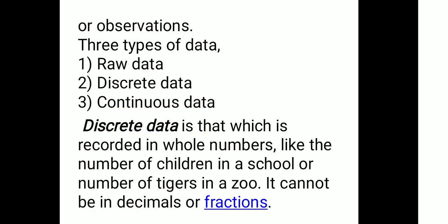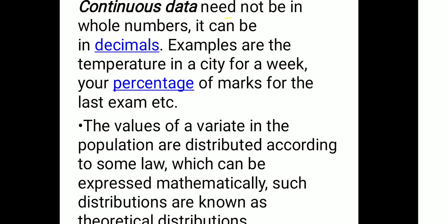Discrete data is that which is recorded in whole numbers, like the number of children in a school or number of tigers in a zoo. It cannot be in decimal or fractions. Continuous data need not be in whole numbers — decimals are the continuous data expression. Examples are the temperature in a city for a week, or your percentage of marks for the last exam.